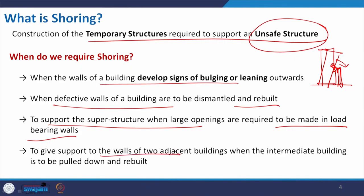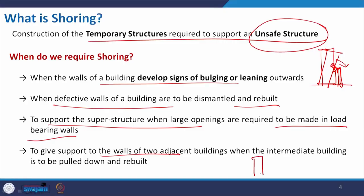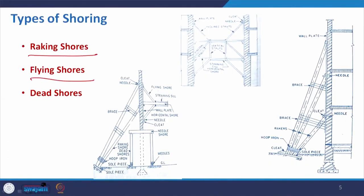Shoring also gives support to the walls of two adjacent buildings. Say we have a series of buildings very close to each other and we have to dismantle the building in between these two. During the dismantling process, the two surrounding buildings may fall towards each other. For that we sometimes have to make those structures stable and give temporary support — that can also be done with shoring. Depending on the position and the purpose, shoring is further divided into three parts: racking shores, flying shores, and dead shores.